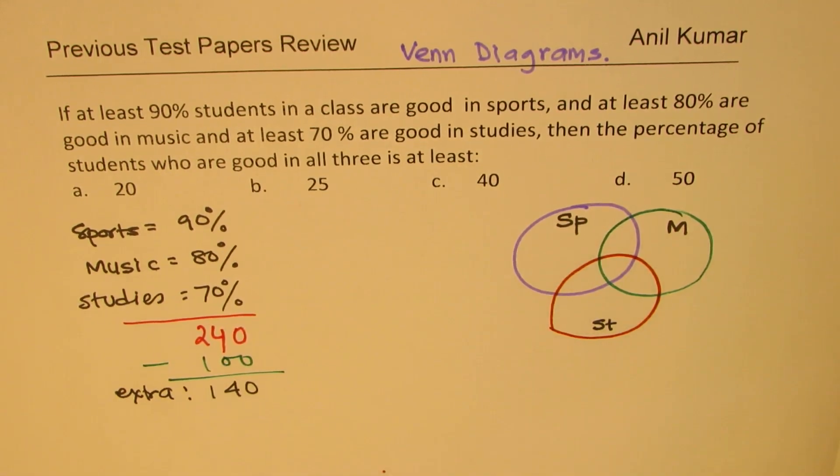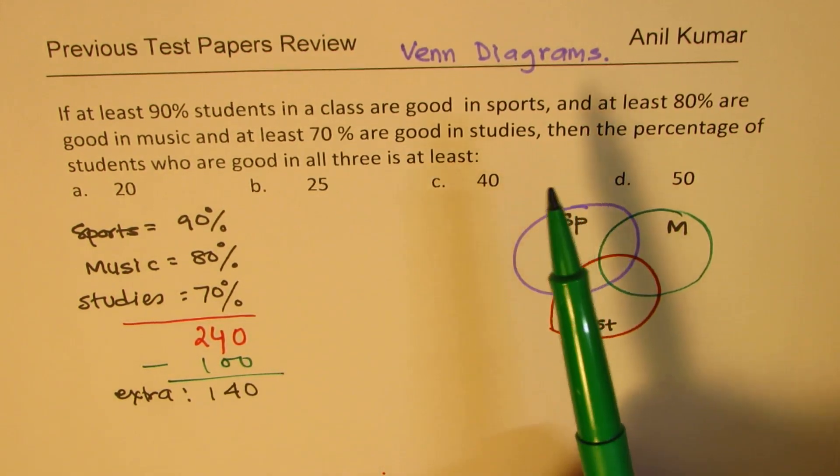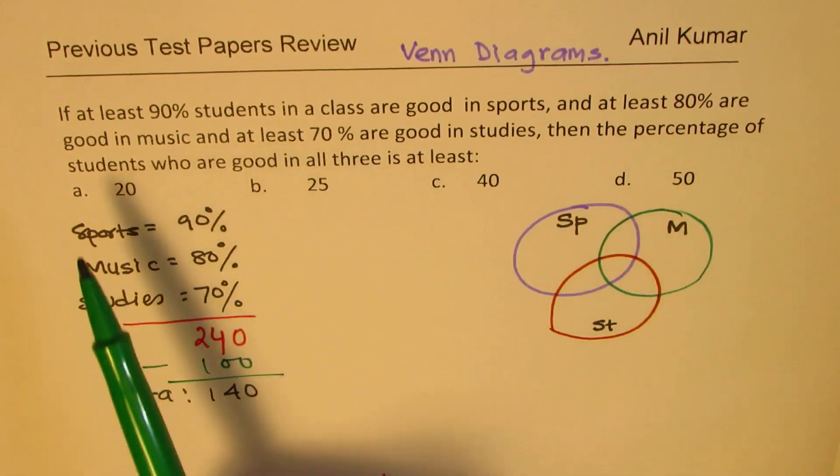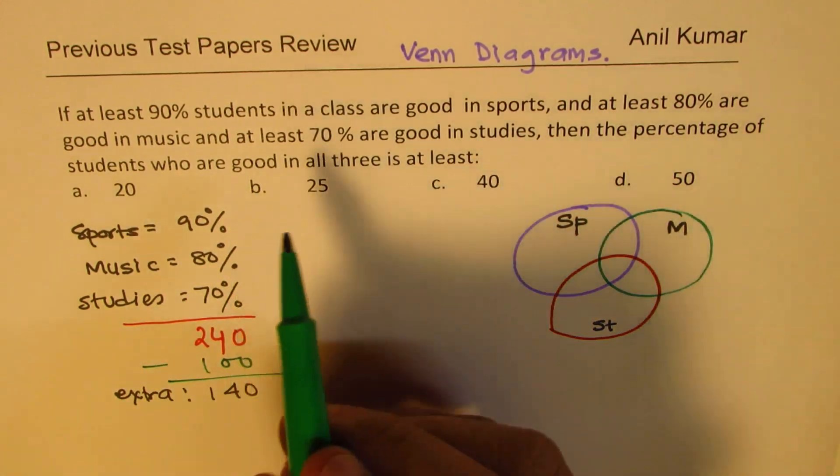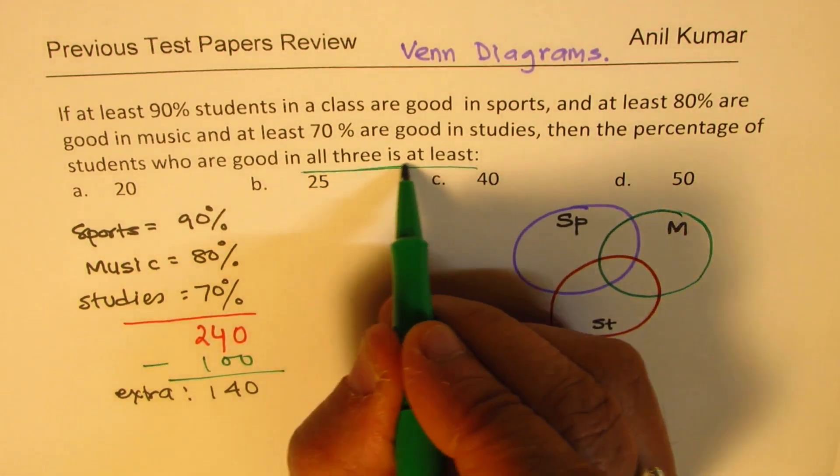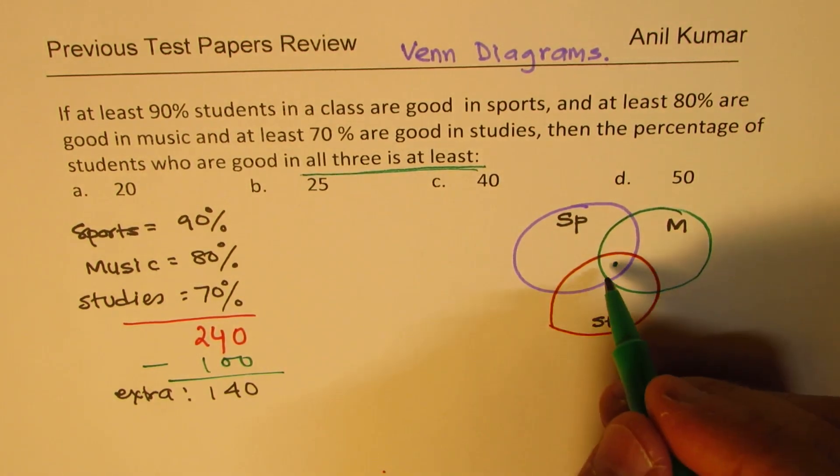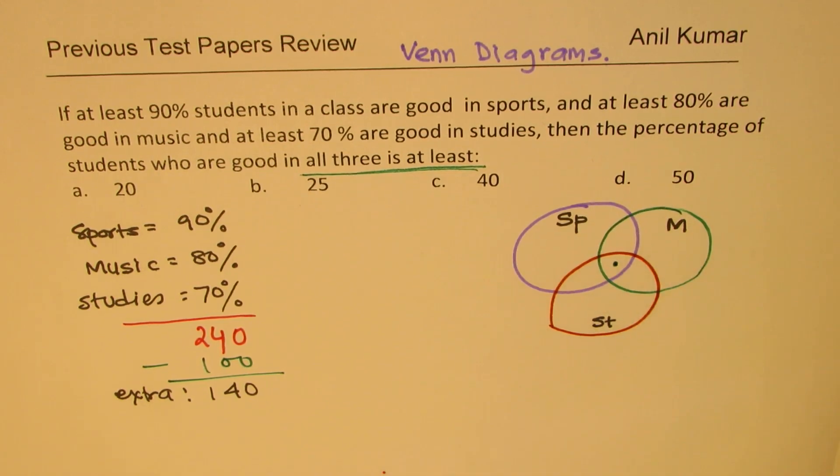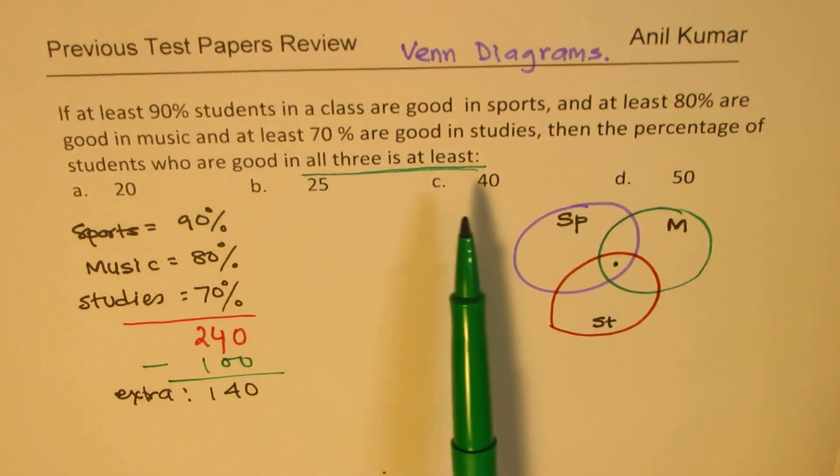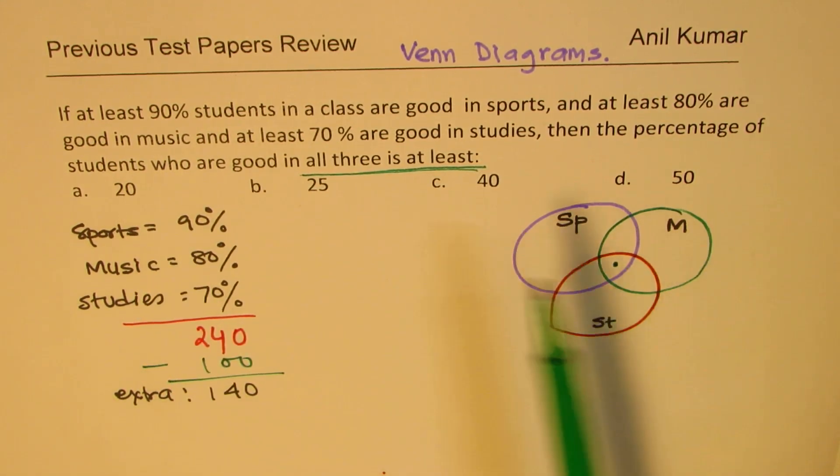Now in a Venn diagram, how do we adjust this 140? Now let's look into the question also. It says, then the percentage of students who are good in all three is at least. So all three least means this group. We want to keep this minimum. So the idea is that has to be minimum. Out of the choices, we have 20, 25, 40, 50. You'll be inclined to 20, and then you'll try it out.